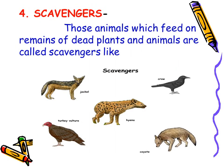The next type of consumers are scavengers. Those animals which feed on remains of dead plants and animals are called scavengers — they eat the flesh of dead animals or dead plants. These animals help to keep the environment clean by feeding on dead plants and animals. Some examples are jackal, crow, hyena and vulture.